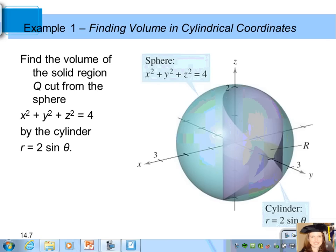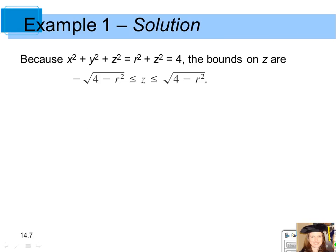In this example, we want to find the volume in cylindrical coordinates. Find the volume of the solid region Q cut from the sphere x squared plus y squared plus z squared equals 4 by the cylinder r equals 2 sine theta. The sphere is sketched in three dimensions, and r equals 2 sine theta — which you can graph in polar mode on a graphing calculator — is a circle centered on the y-axis. You're cutting through that sphere with the cylinder r equals 2 sine theta.